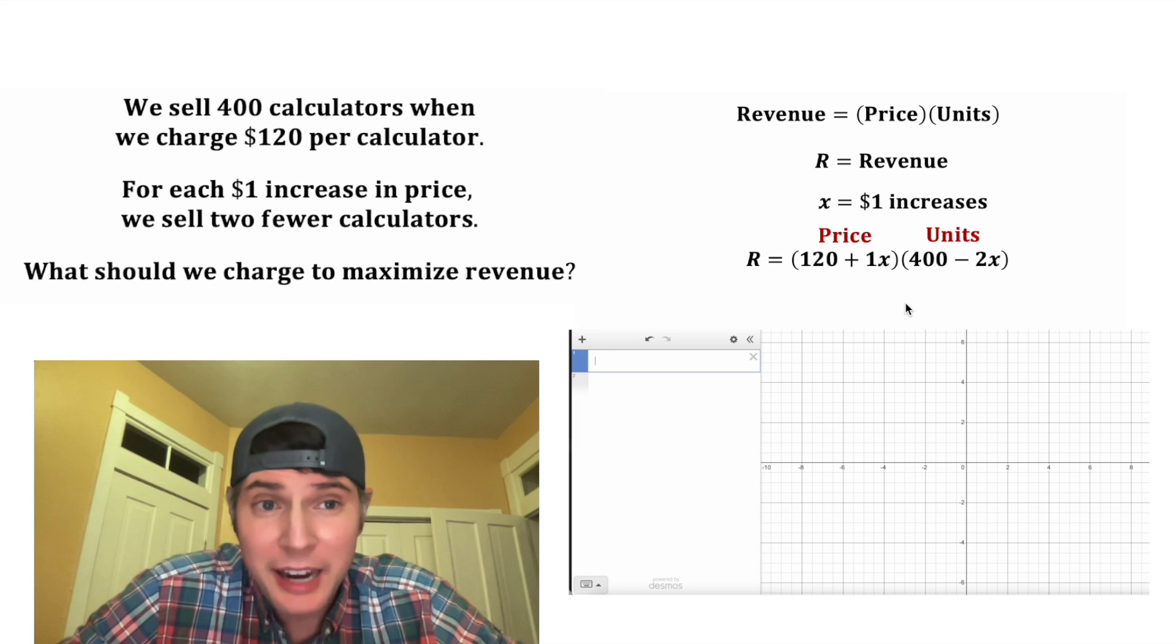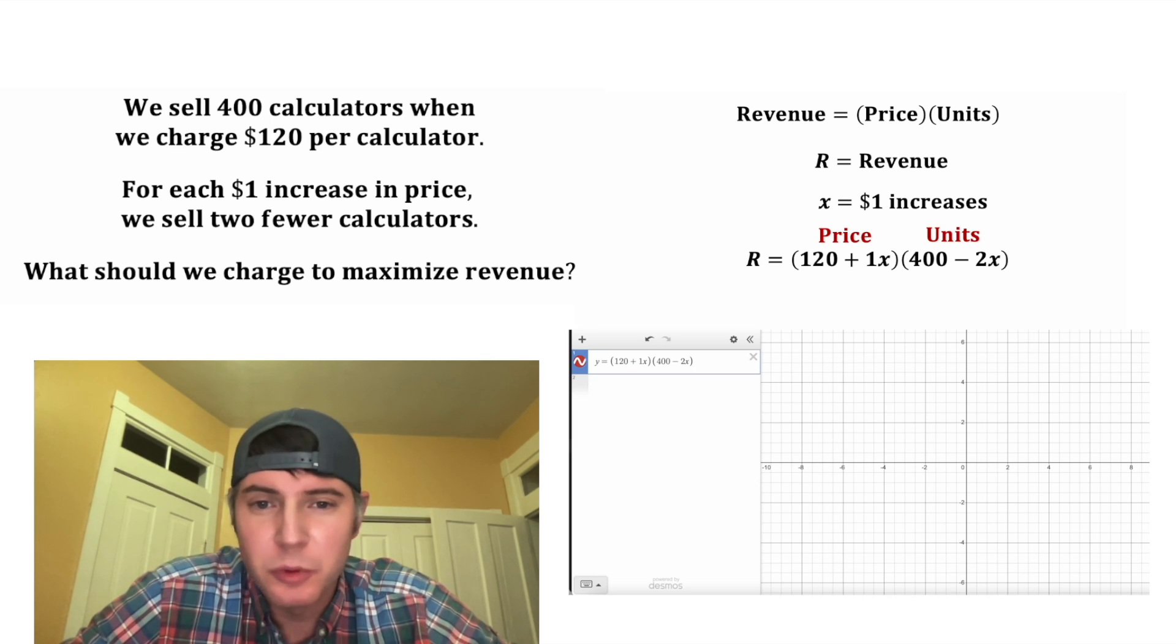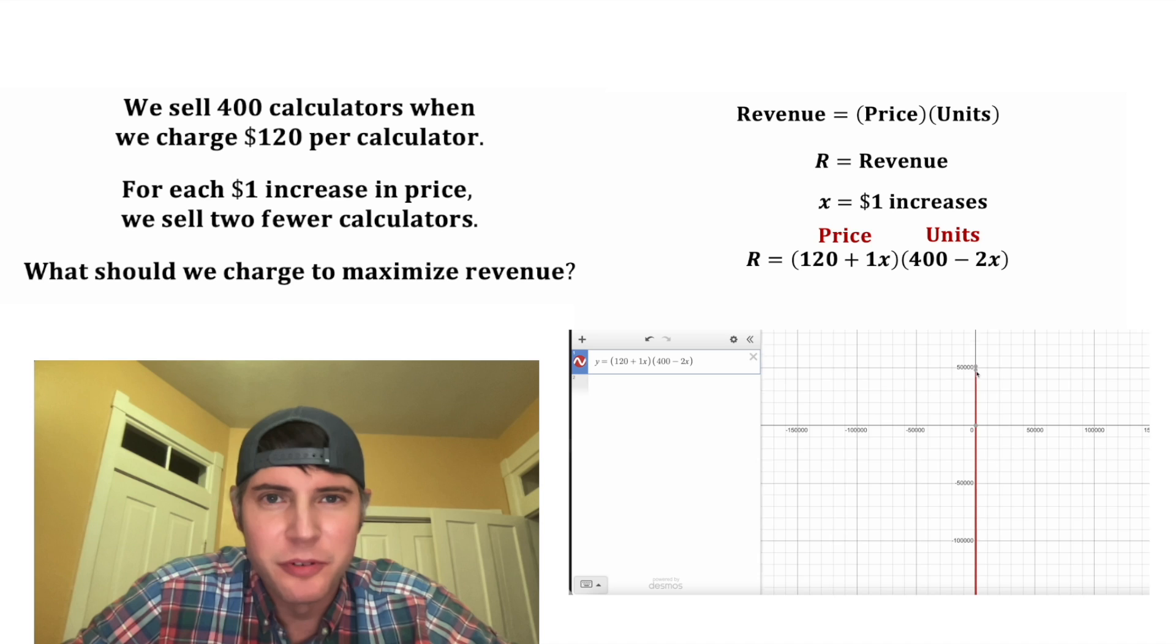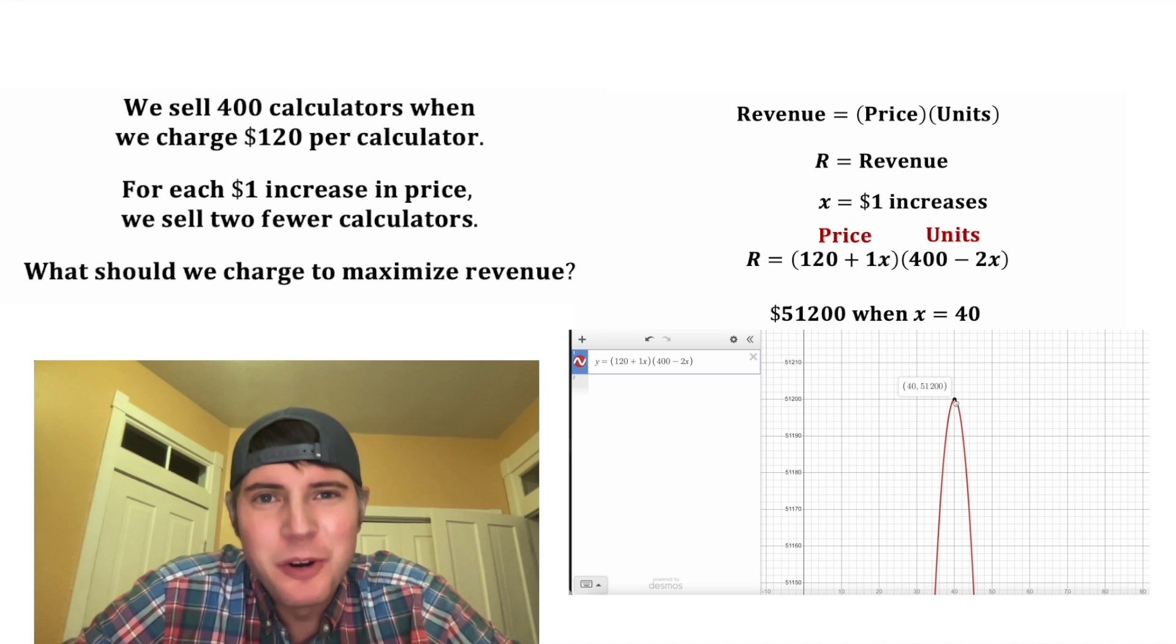And now we have an equation. So if we have access to a grapher like Desmos, we can just plug this in. It'll just be Y equals 120 plus 1X times 400 minus 2X. And here's the graph right here. And we can move it till we find the vertex, and this is the maximum revenue right here. It ends up being $51,200 when X equals 40.